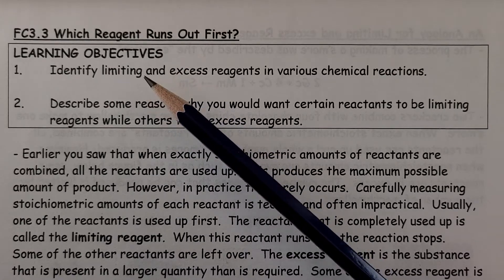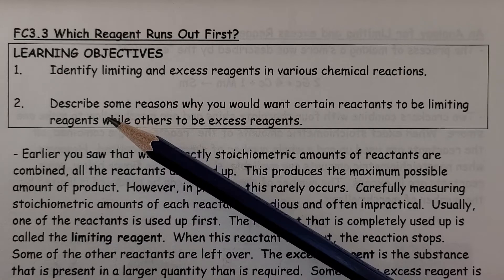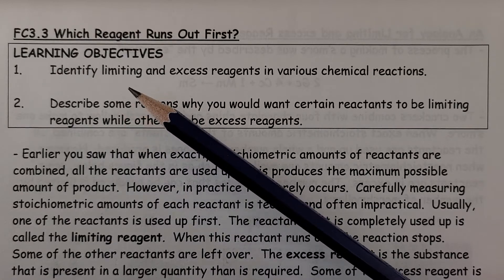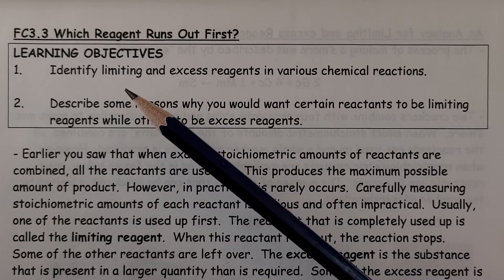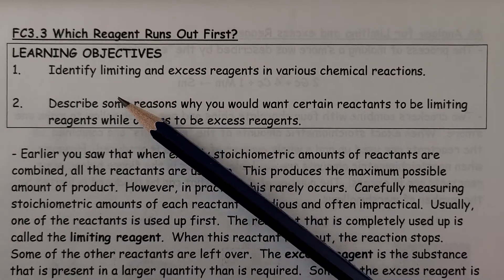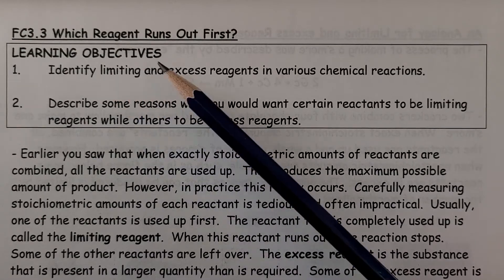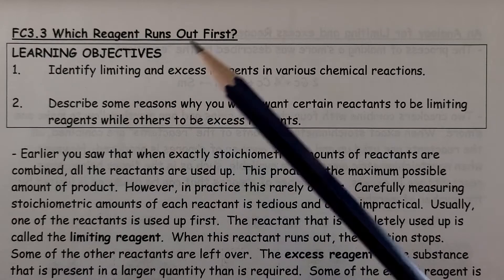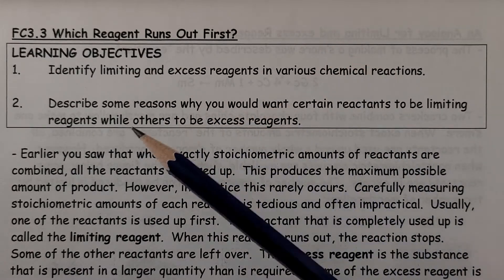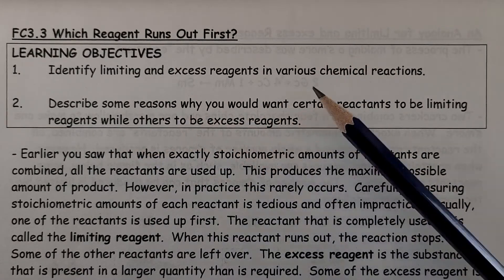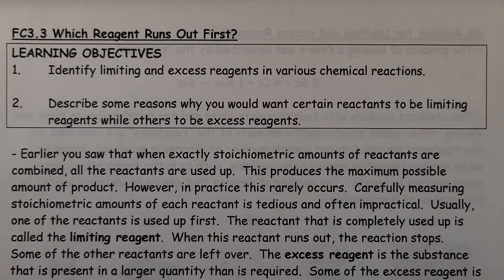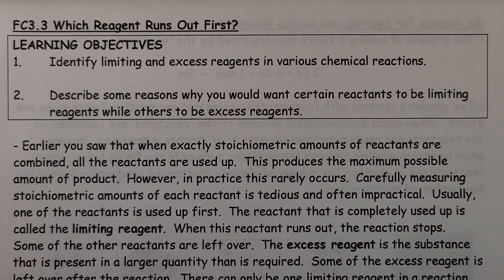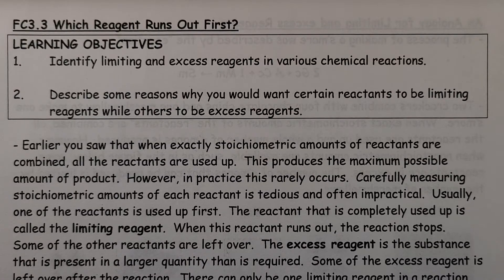In the last section, we looked at stoichiometric amounts — ones that involved both reactants getting used up completely. But of course, in reality, that doesn't usually happen. We usually have one thing running out and one thing left over. So we'll look at identifying what gets used up and what's left over in limiting and excess reagents. This section doesn't involve any calculations — it's just looking at the concept of limiting and excess reagents.